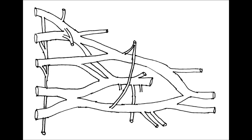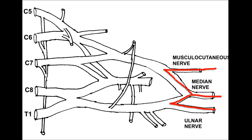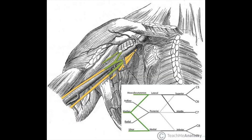Immediately distal to the cords, an important anatomical landmark is the M formation created by the musculocutaneous nerve, ulnar nerve, and median nerve, which helps identify the different structures.